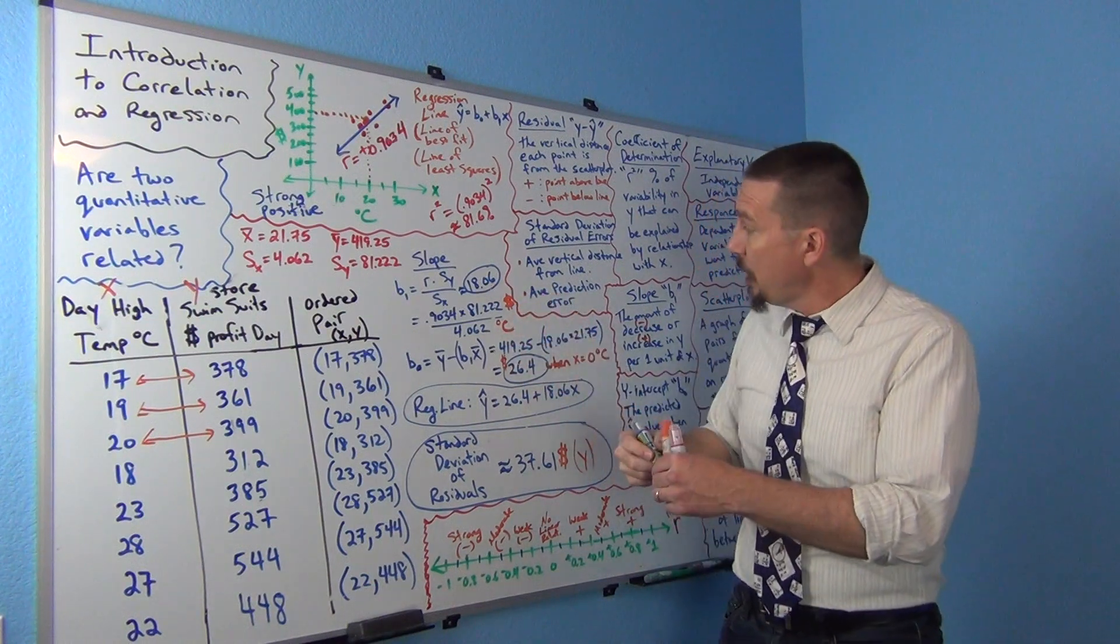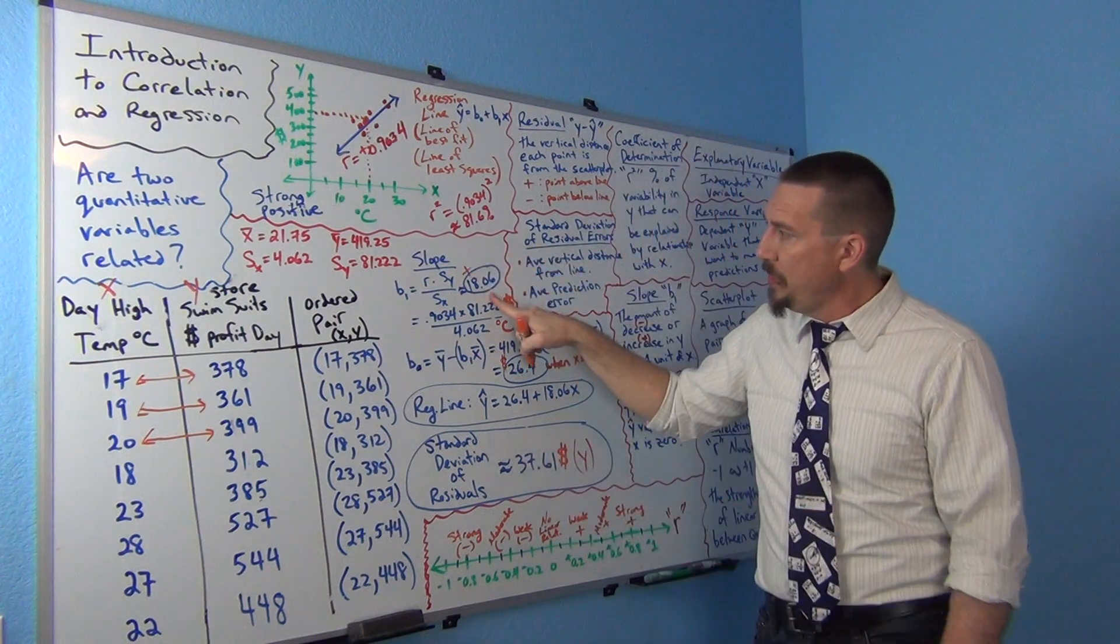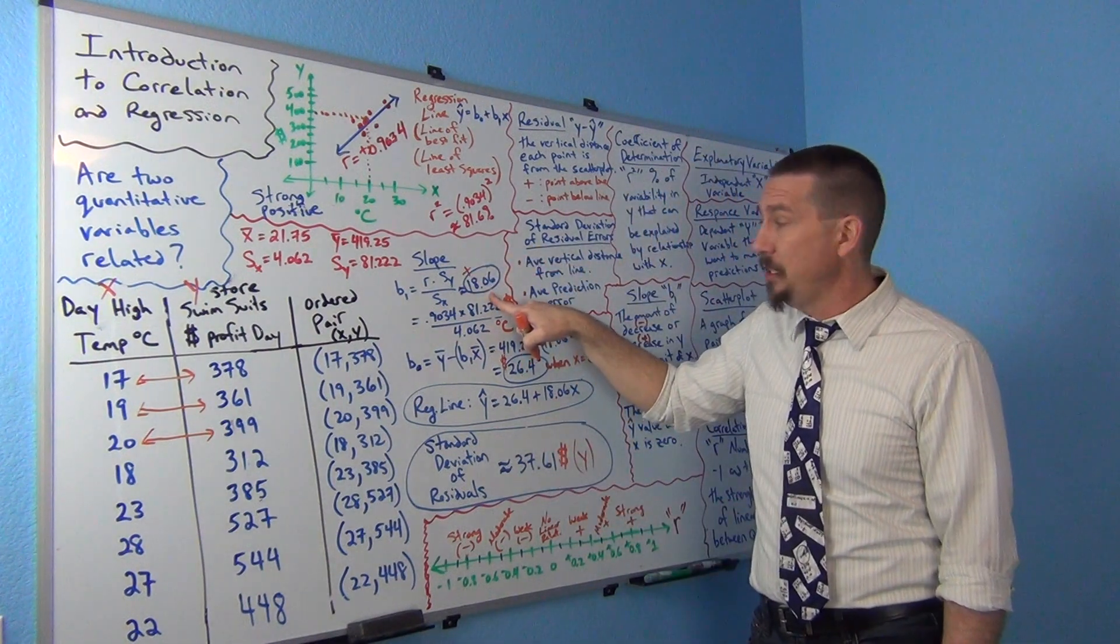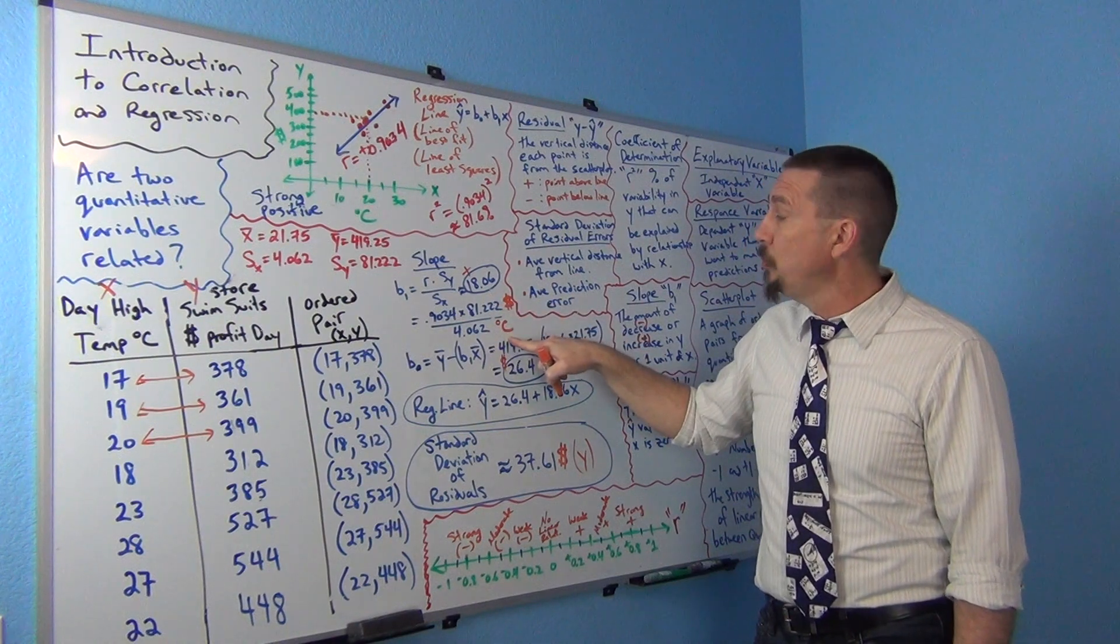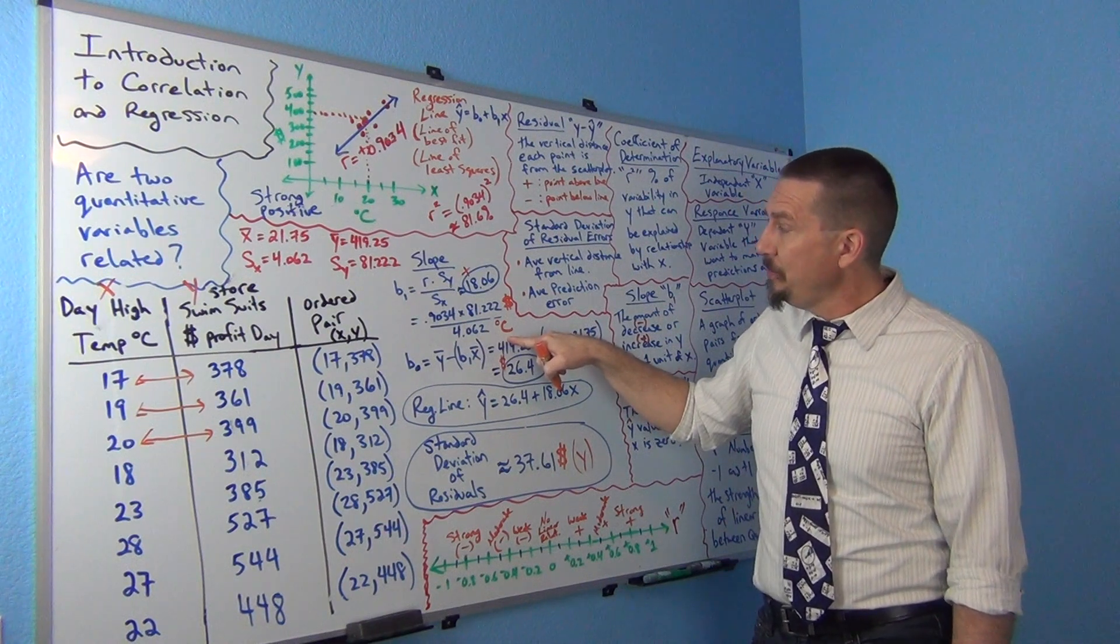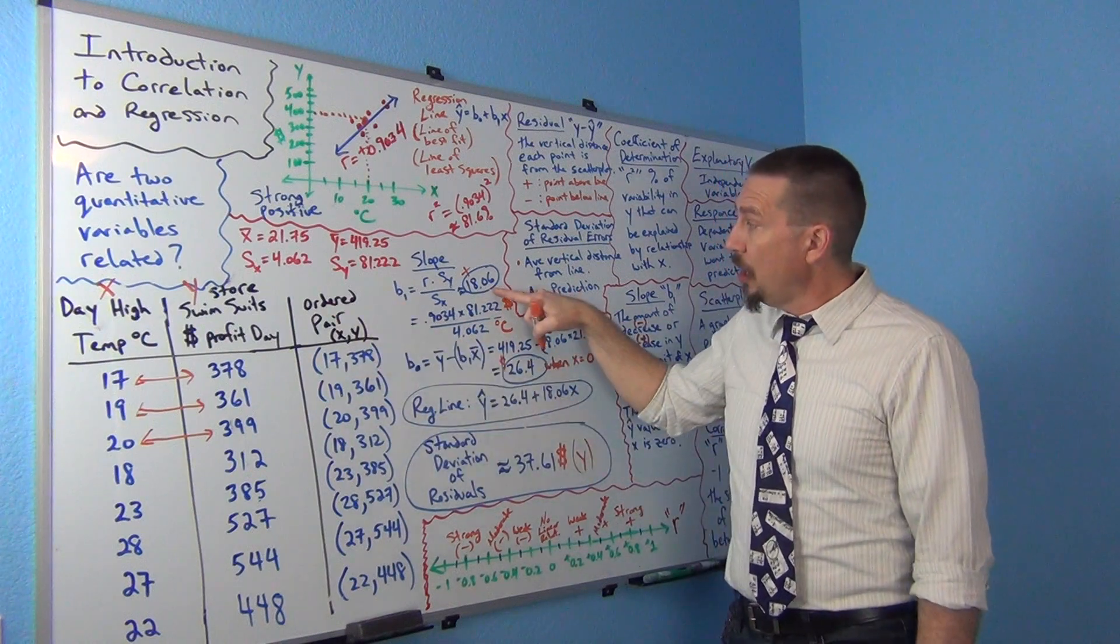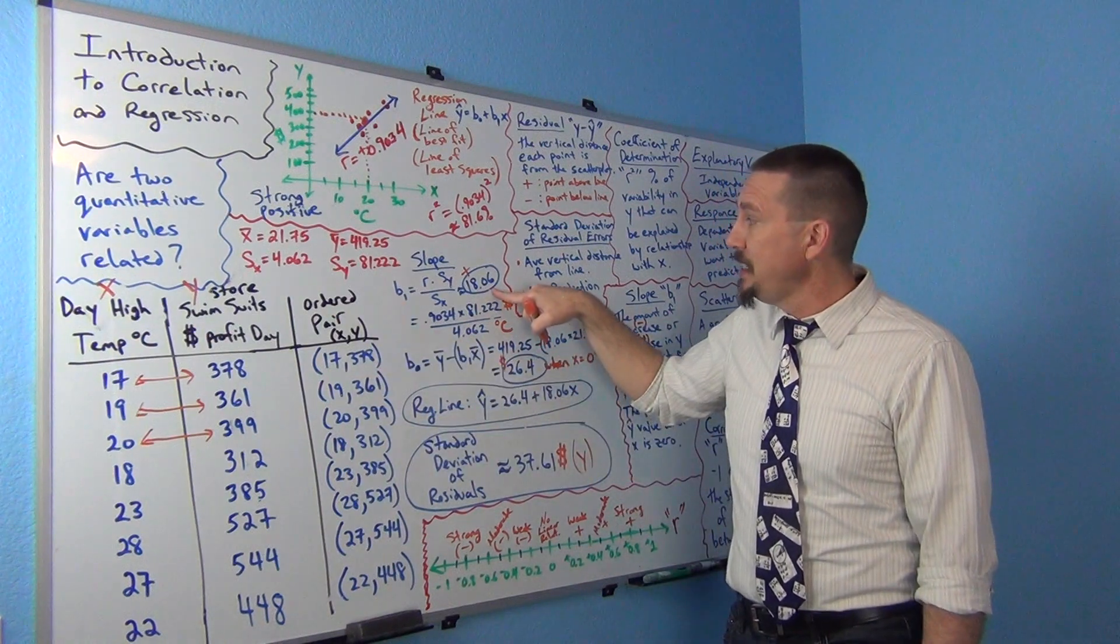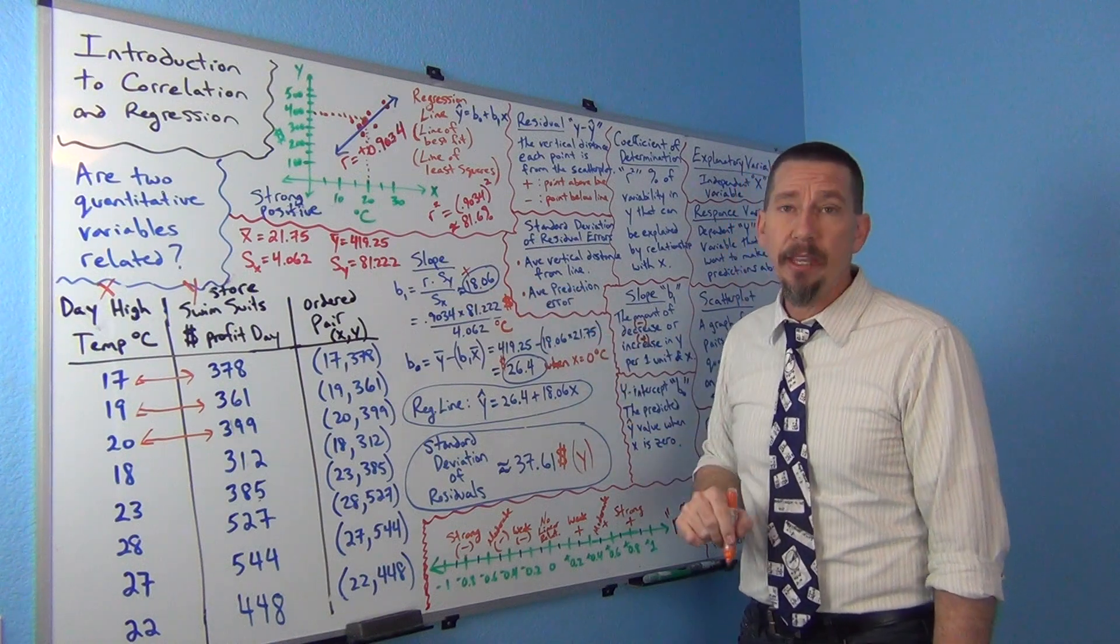So you can kind of get this idea that this number, first of all, came out positive, right? That's very important. This was a positive number. That means the y is increasing. So for every one unit of x, so for every one degree Celsius, the profits, daily profits of the swimsuit store, are increasing about 18.06 on average. Okay? That's kind of a good way to think about it.